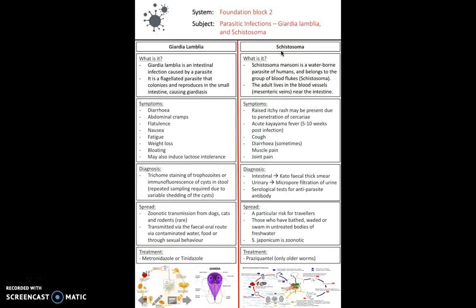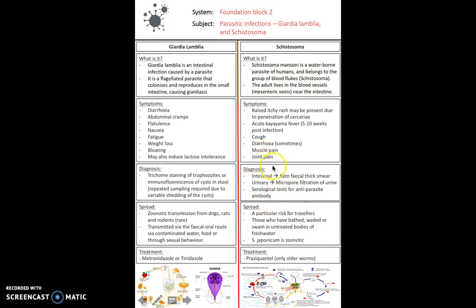Schistosoma mansoni is a waterborne parasite of humans belonging to the group of blood flukes. The adult lives in the blood vessels of the mesenteric veins near the intestine. It causes raised itchy rashes due to penetration of the cercariae, and can cause acute Katayama fever after original infection, presenting with cough, diarrhea, muscle pain, and joint pain. Diagnosis is through intestinal, urinary, or serological tests. It's a particular risk for travellers who have bathed, waded, or swum in untreated fresh water. Treatment with praziquantel works only on adult worms, not younger ones.